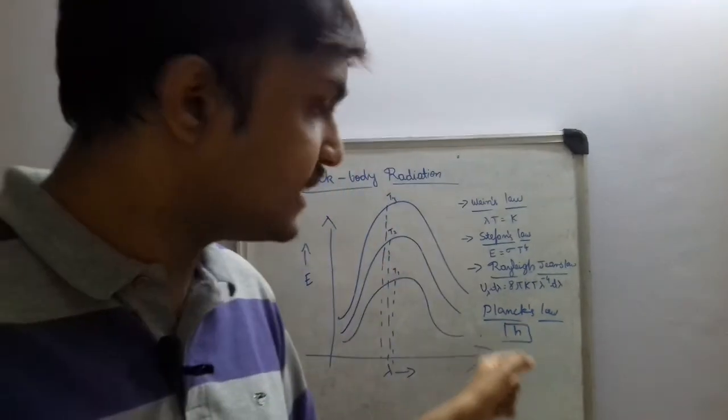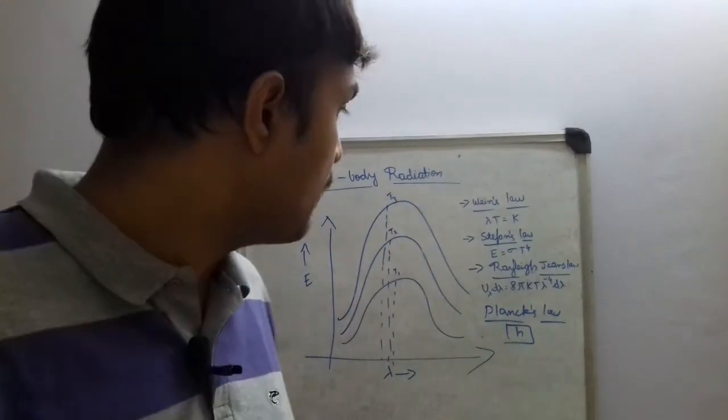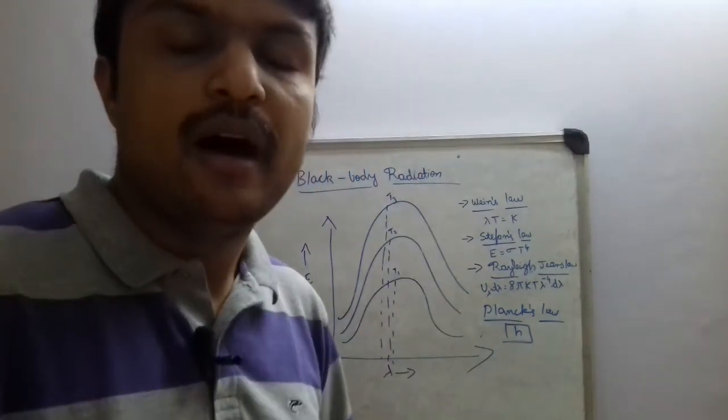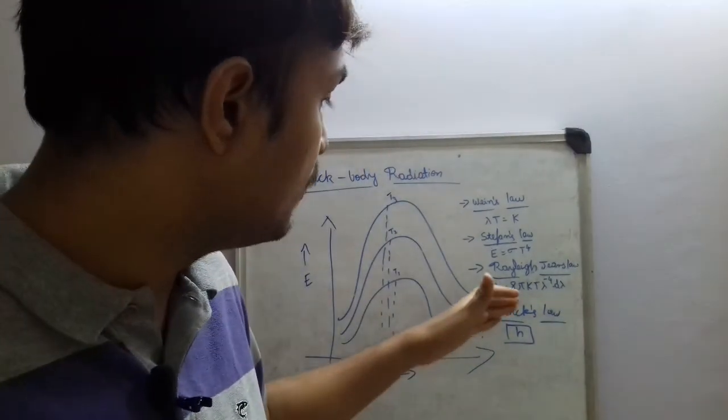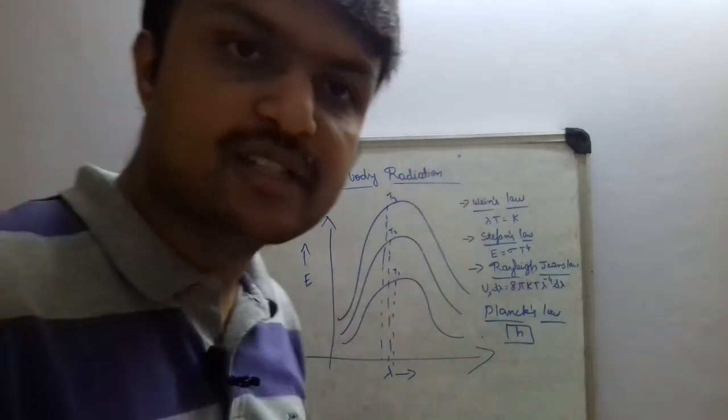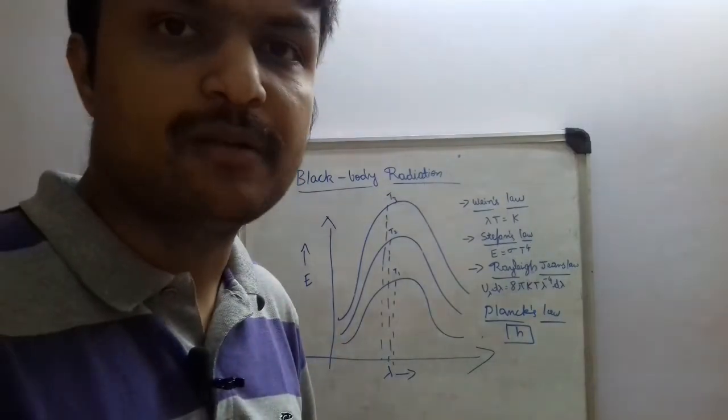So once this came into the equations, once this came to the energy form equation, we were able to deduce this to Rayleigh-Jeans law as well as Wien's law to explain the entire part of the spectrum